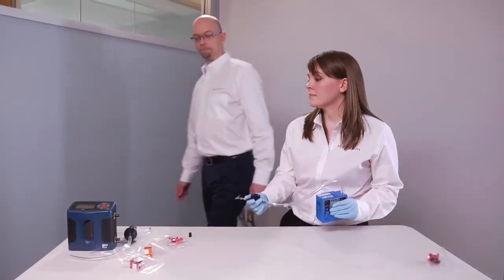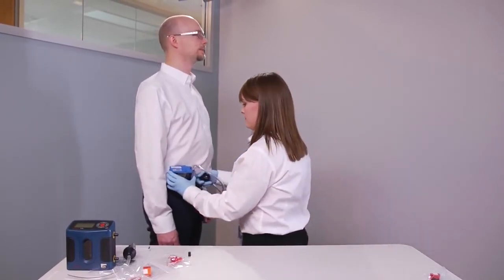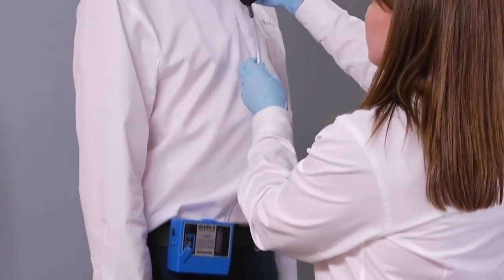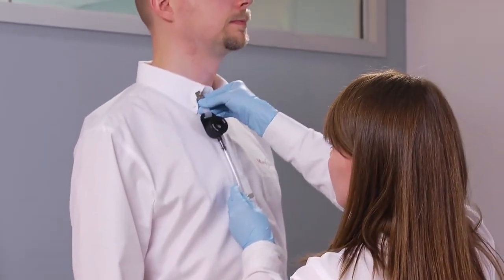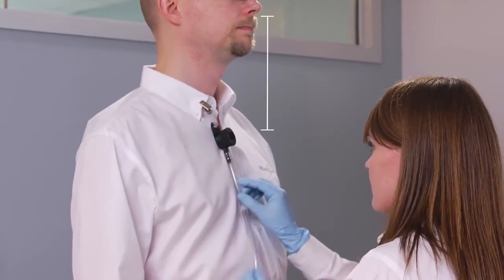As usually done for an industrial hygiene sample, clip the sampling pump securely onto the belt of the employee, minimizing interference with the work activities. Then using the sampler clip, attach the IOM sampler in or near the employee's breathing zone.